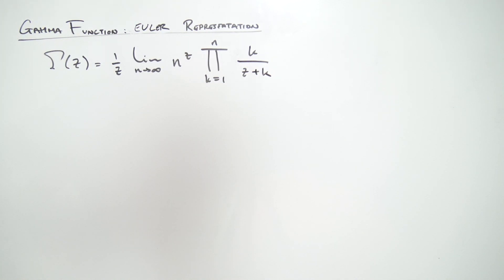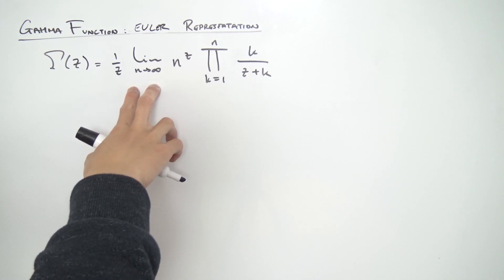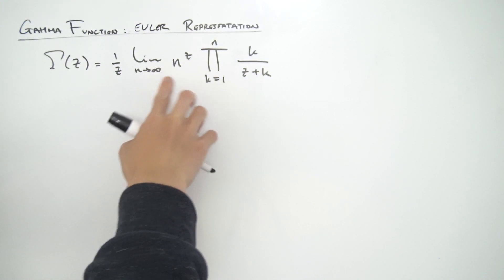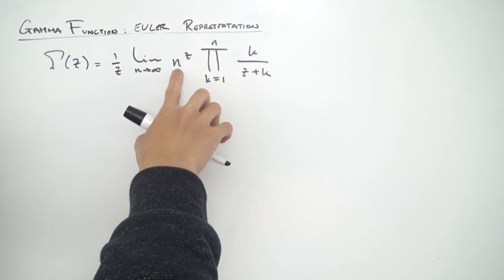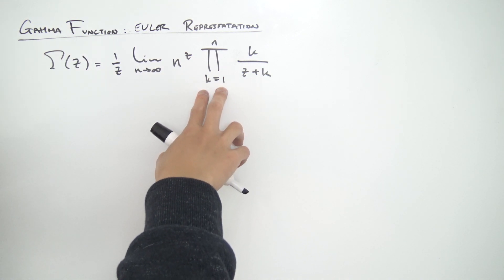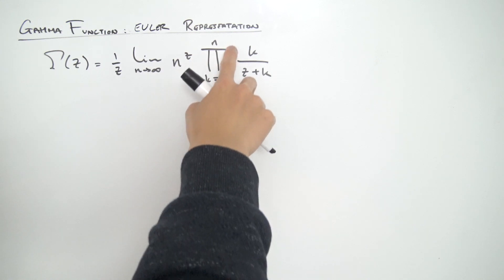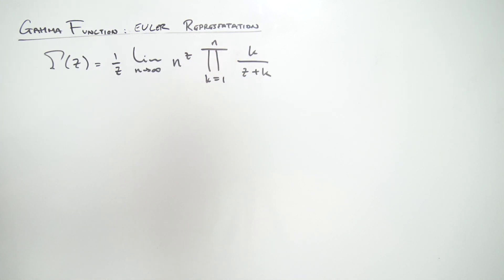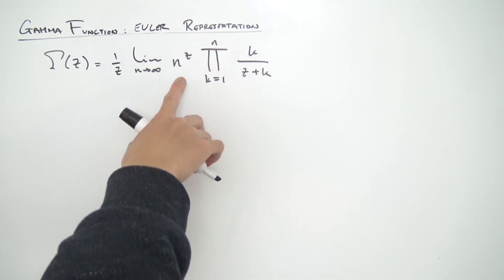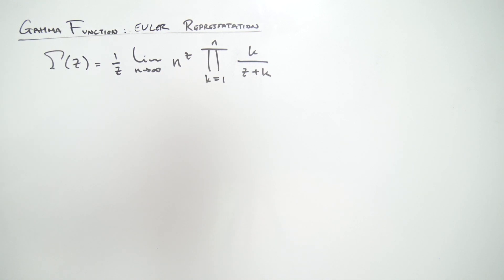Just like with the Weierstrass representation, we want to get rid of this limit. The way we're going to do that is by turning this n^z into some kind of product, so we can combine it with the existing product and then just take the limit as n approaches infinity on the upper bound. So how do we turn n^z into a product?